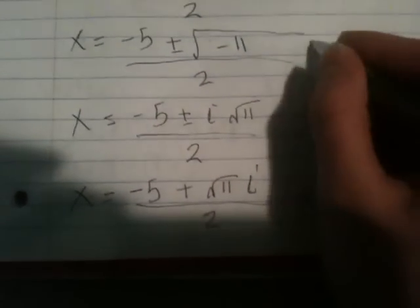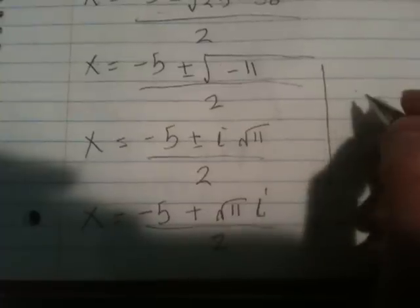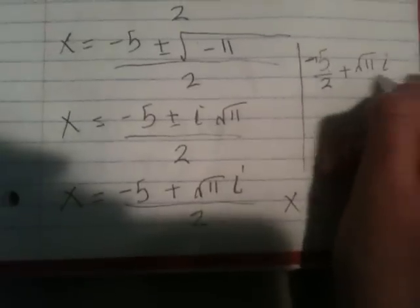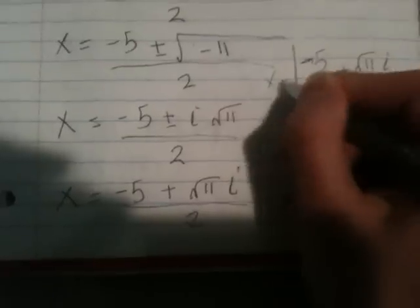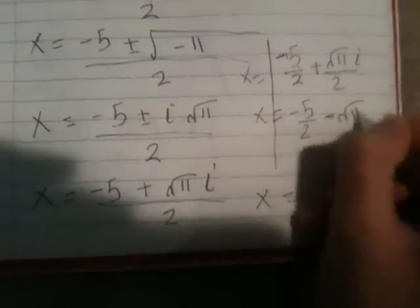So we have x equals negative 5 plus square root of 11 times i, divided by 2, which can also be written as x equals negative 5 over 2 minus square root of 11 times i over 2. This will be our answer, and I hope this helped you guys, thank you.